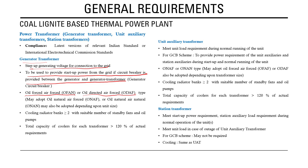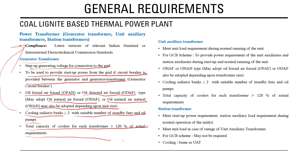The cooling radiator banks should number more than two, with a suitable number of standby fans or oil pumps. The total cooler capacity for each transformer should be more than 120 percent of the actual requirement, providing redundancy. For example, if 10 fans are needed, 12 fans are provided so that if one fails, sufficient cooling capacity remains.